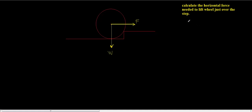We want to calculate the horizontal force needed to lift the wheel just over the step. We're given that the step's height is h and the radius of the circle is r. We're going to use torque, and for that we need to find the moment arm for each force — we have the force of the weight in a downward direction and the force in the horizontal direction.